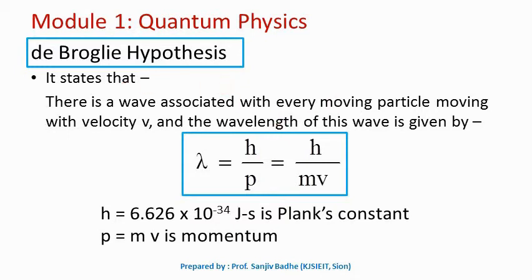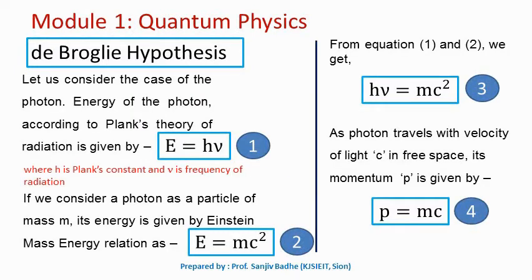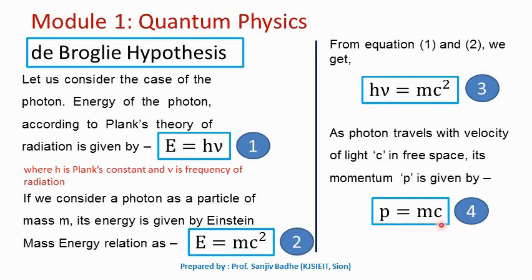The De Broglie relation can be supported using Planck's theory and Einstein's theory. The energy of a photon according to Planck's theory is given by E = hν, where h is Planck's constant and ν is the frequency of radiation. If we consider the photon as a particle of mass m, then its energy as per Einstein's mass-energy relation is E = mc². So both hν and mc² are energies of the photon and we can equate them: hν = mc² (equation 3). Since the photon travels with velocity c, its momentum p = mc (equation 4).